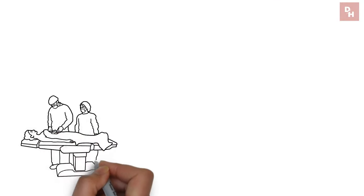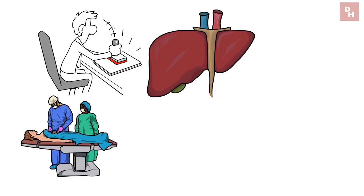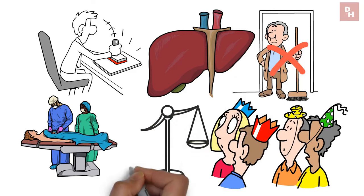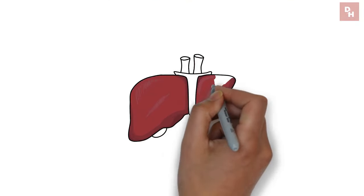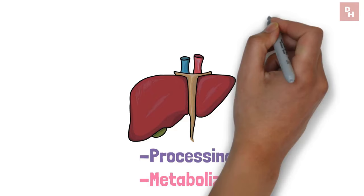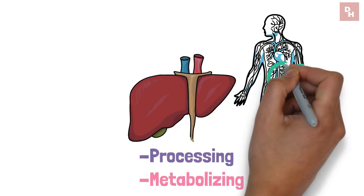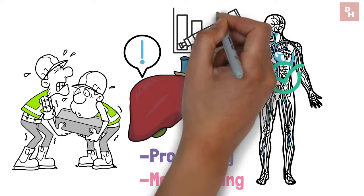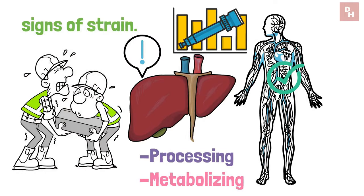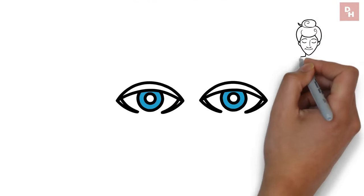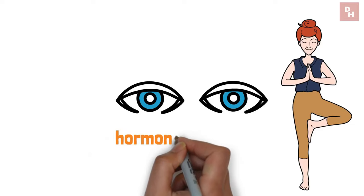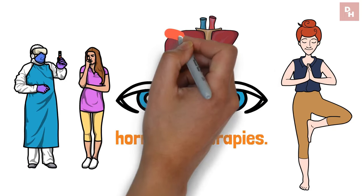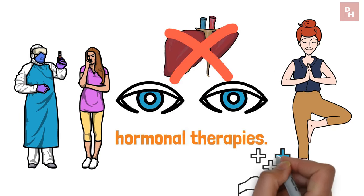Hormonal therapies, for all their perks, require your liver to put in some extra work. It's like throwing a big party and not hiring a cleanup crew. Someone's going to do the heavy lifting. In this case, that someone is your liver, processing and metabolizing these hormones so your body can use them effectively. But just like any hard worker, the liver has its limits. Push it too hard for too long, and you might start seeing signs of strain. This is why keeping an eye on liver health becomes crucial when you're on hormonal therapies. Regular checkups can be your best friend here, ensuring that your liver isn't singing the blues while you're reaping the benefits of hormonal balance.